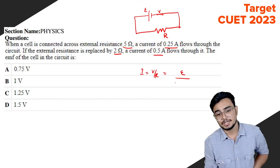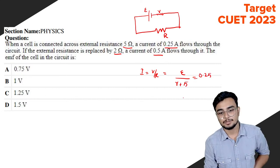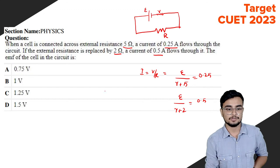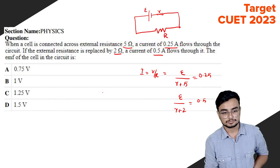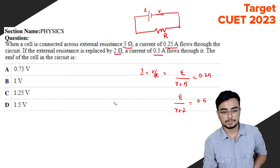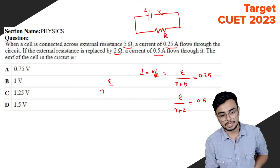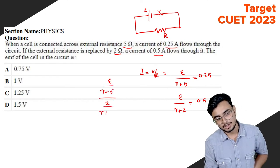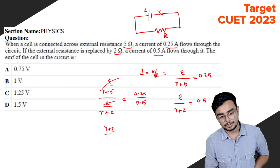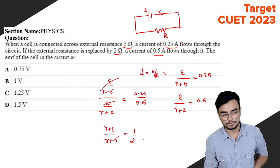Using i equals E divided by r plus R: for 5 ohms we get 0.25, and for 2 ohms we get 0.5. Dividing the two equations: E/(r+5) divided by E/(r+2) equals 0.25/0.5. This gives (r+2)/(r+5) equals 1/2, which implies internal resistance r equals 1 ohm.